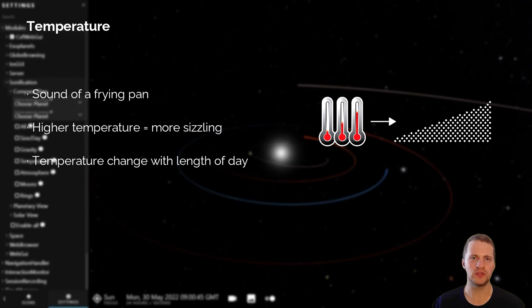Temperature is conveyed with a noise impulse generator, which resembles the sound of a frying pan, where a higher temperature increases the intensity of the sizzling. The temperature change of a planet was conveyed by sweeping through the temperature interval of the planet in sync with its length of day, such that the lowest temperature is audible during the night time for a fixed position on the planet, and the highest temperature is audible during the daytime.